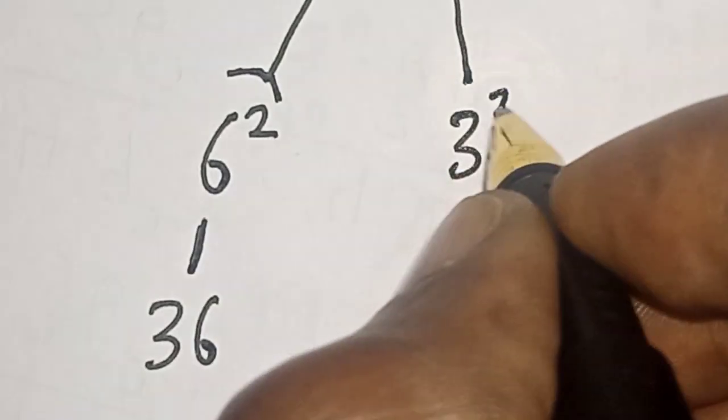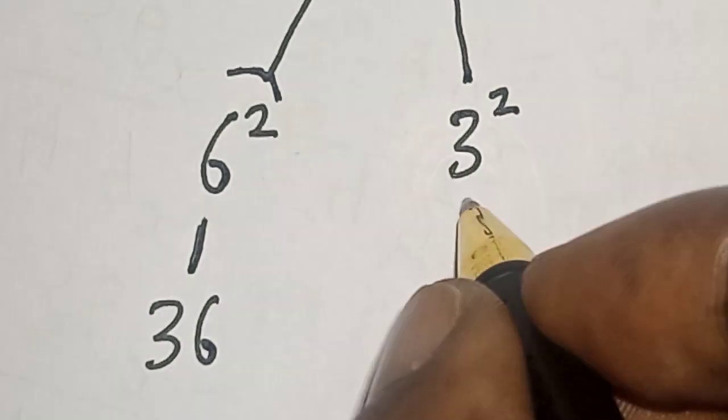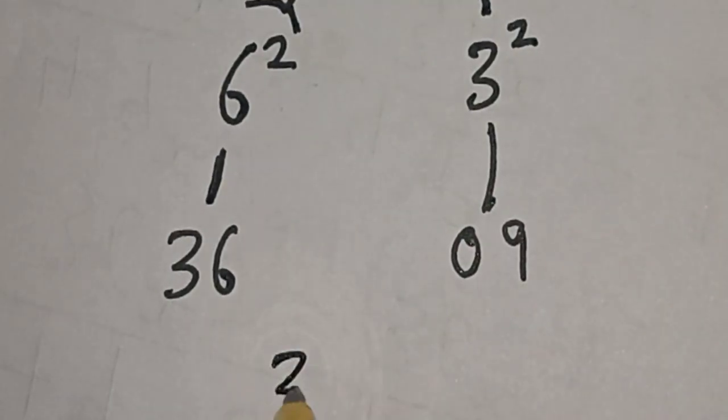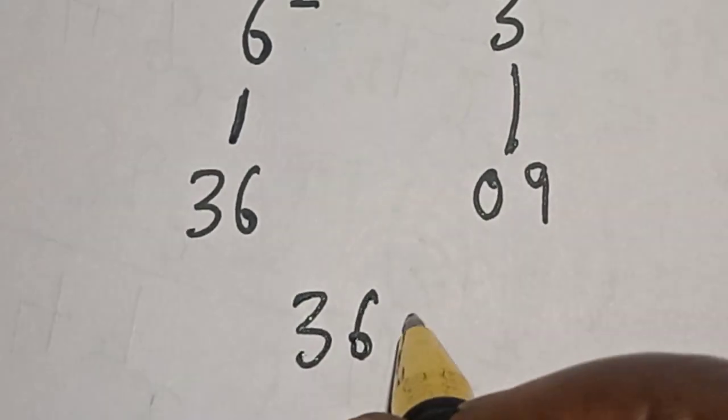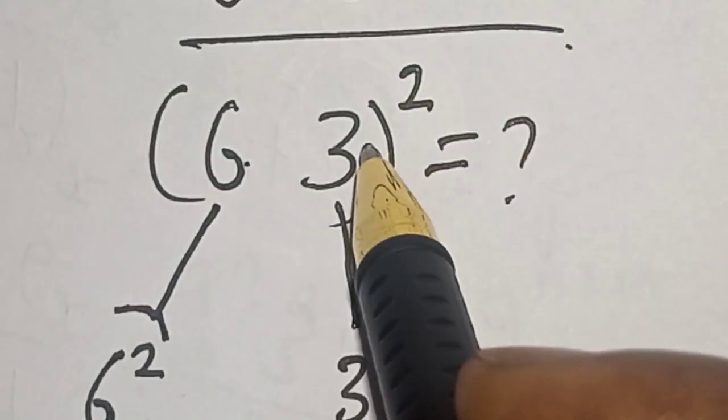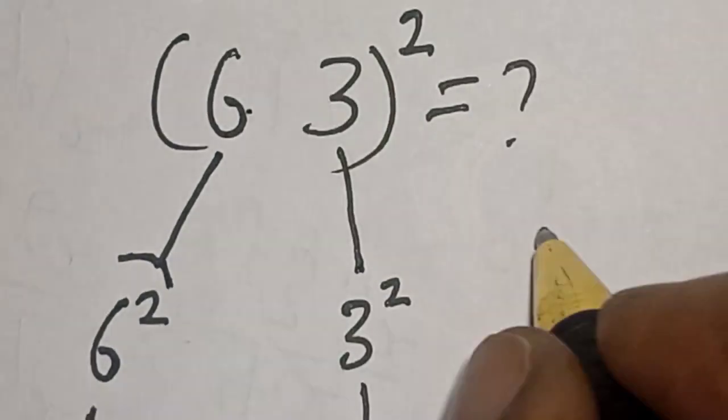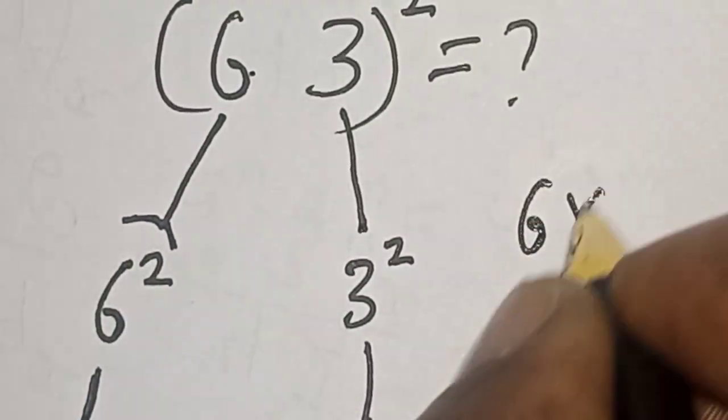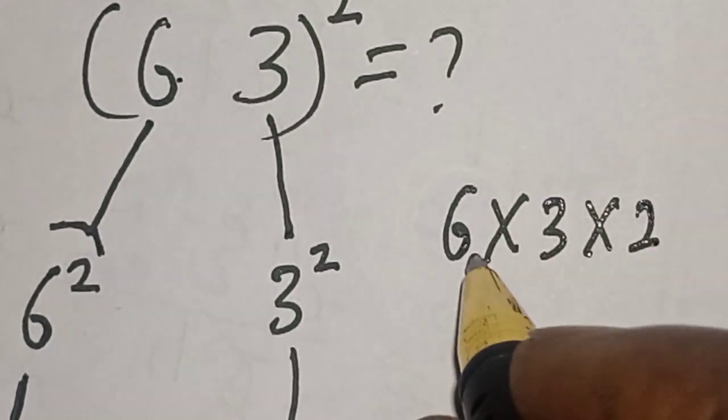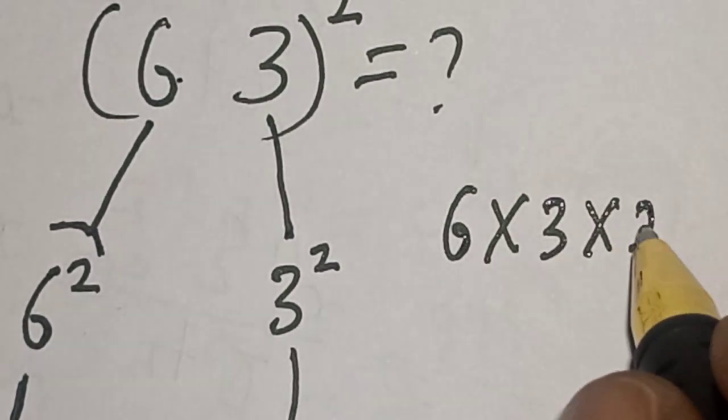And here is 3. 3 squared. This is 09. Now we have this and this. This is 3609. And remember we have this as 6, 3, and this is 2. This is 6 multiplied by 3, multiplied by 2. 6 times 3, 18 times 2, this is 36.